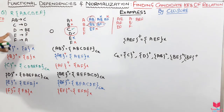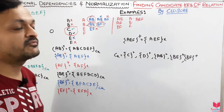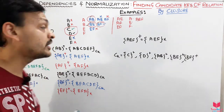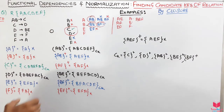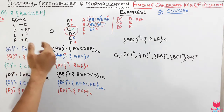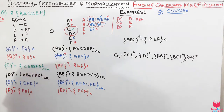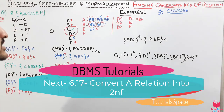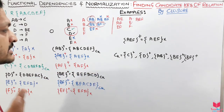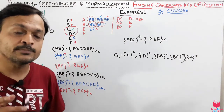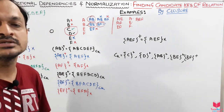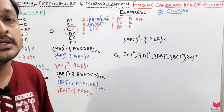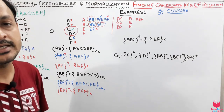This is all about how we can find candidate keys when all attributes exist on the right-hand side — we go one by one, then two-combination, then three-combination, until all attributes are used. In the next session we will discuss more examples or move to third normal form. If my videos are helping you, please like, share, subscribe, and follow the playlist. Thank you and take care.